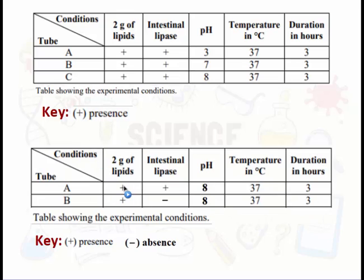another experiment, let's say two tubes, both have lipids. So we put the plus sign, but only one tube has intestinal lipase, while the other doesn't. So we put plus, which means presence of lipase in tube A and minus, which means absence of lipase in tube B.